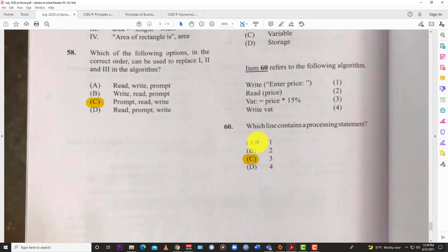The last one for the June-July 2020 Information Technology Paper 1 for CSEC. Question 60 refers to the following algorithm: Enter price. One: read price. Two: VAT equals price asterisk 15%. Three: write VAT. Four. Which line contains a processing statement? Of course that's three because you have to calculate right there. So the answer is C, line 3.